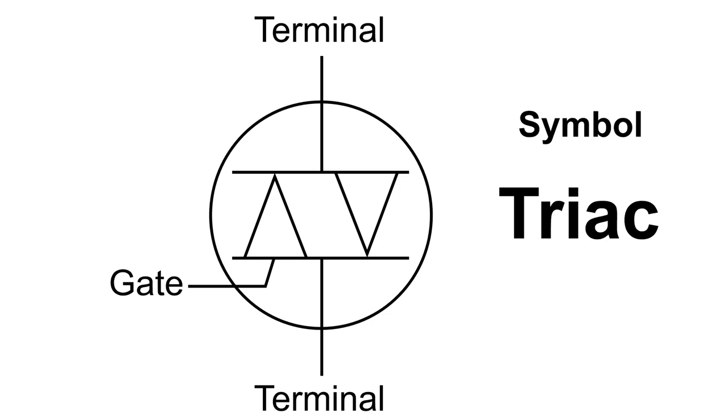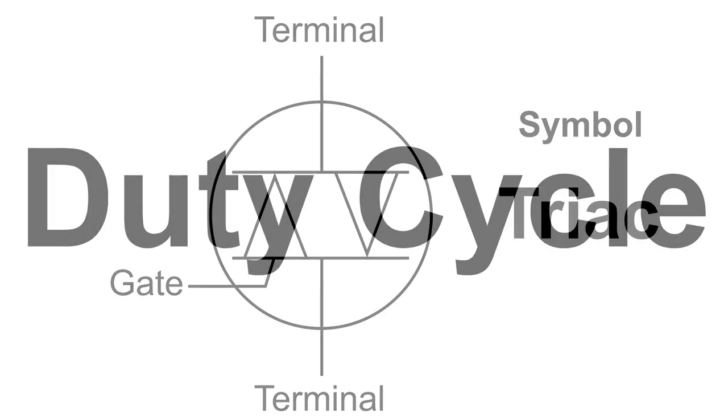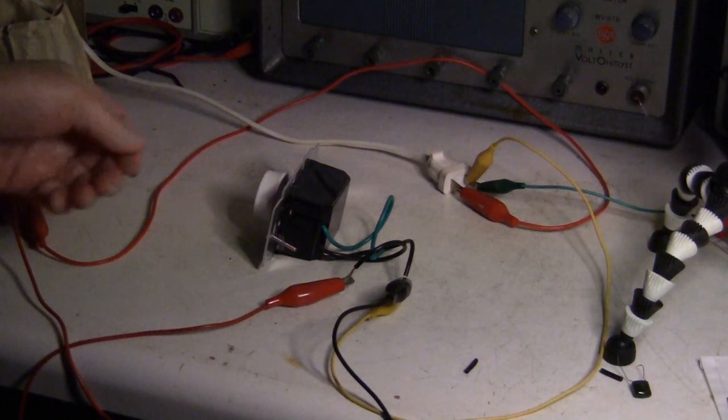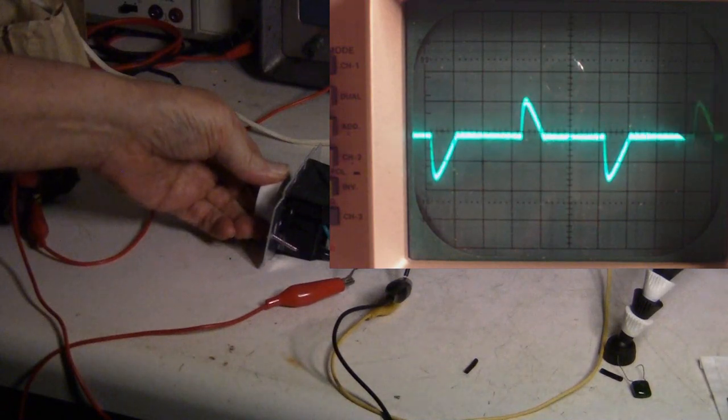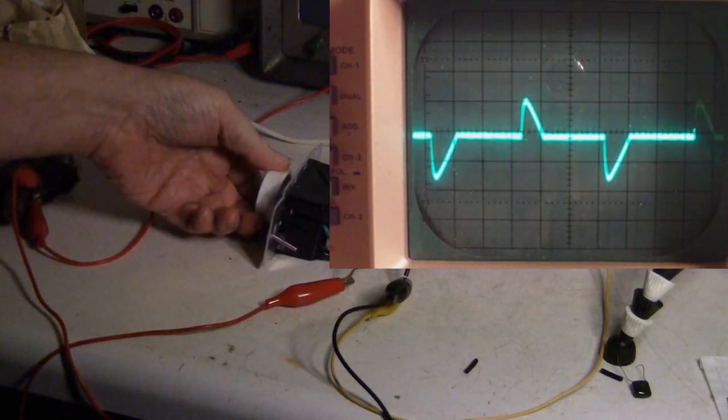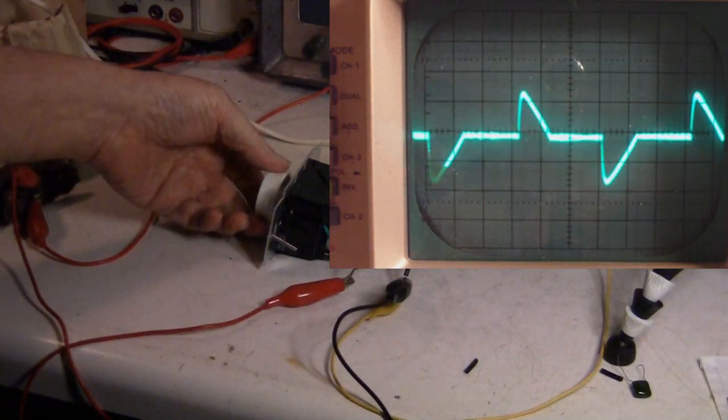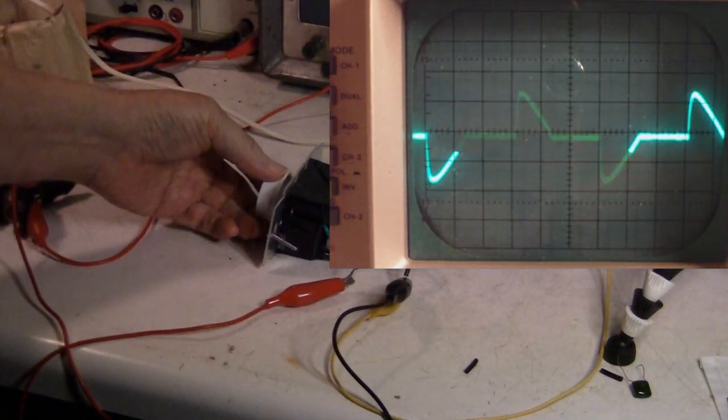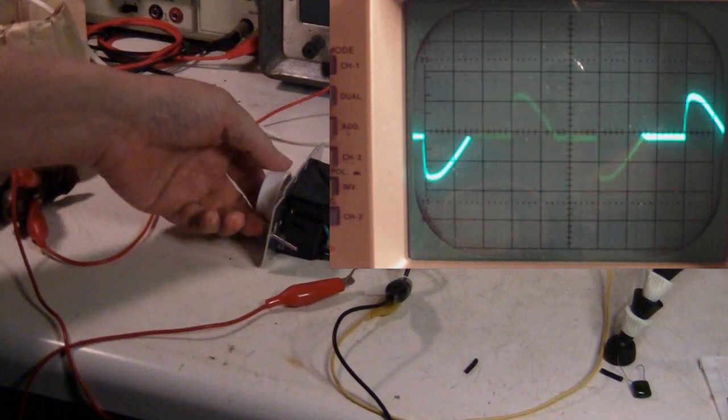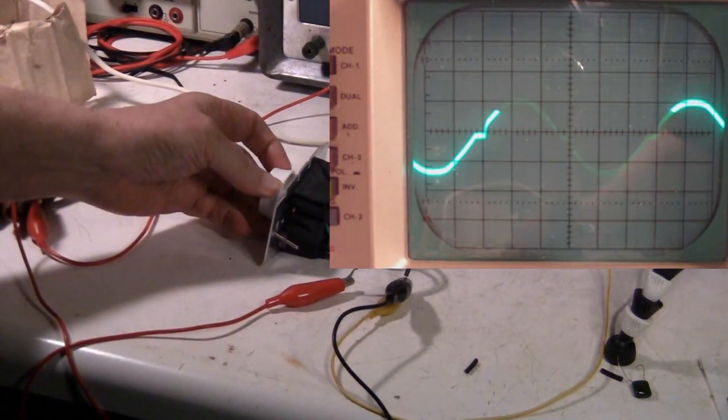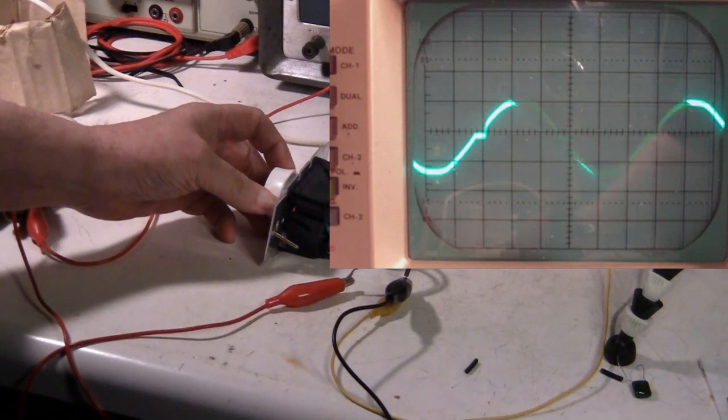Okay, here's the dimmer switch on the workbench. I've just turned it on. You can see what the scope is telling us here. As I increase the dimmer, the sine wave increases.